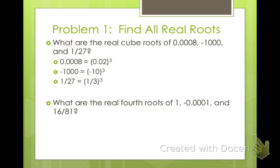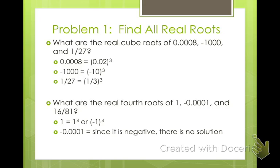Now let's talk about fourth roots. What number times itself 4 times makes 1? Well, 1 works, but also negative 1 four times also makes 1. What about negative 0.0001? We talked about imaginary numbers and there is an imaginary answer, but since this asks about real roots, there is no real fourth root of a negative number, because no number times itself 4 times makes a negative. Odd exponents do have negative roots. For 16 over 81, 2 to the fourth makes 16 and 3 to the fourth makes 81, so we get 2 thirds. But also negative 2 thirds, because negative 2 to the fourth makes 16 and negative 3 to the fourth makes 81.